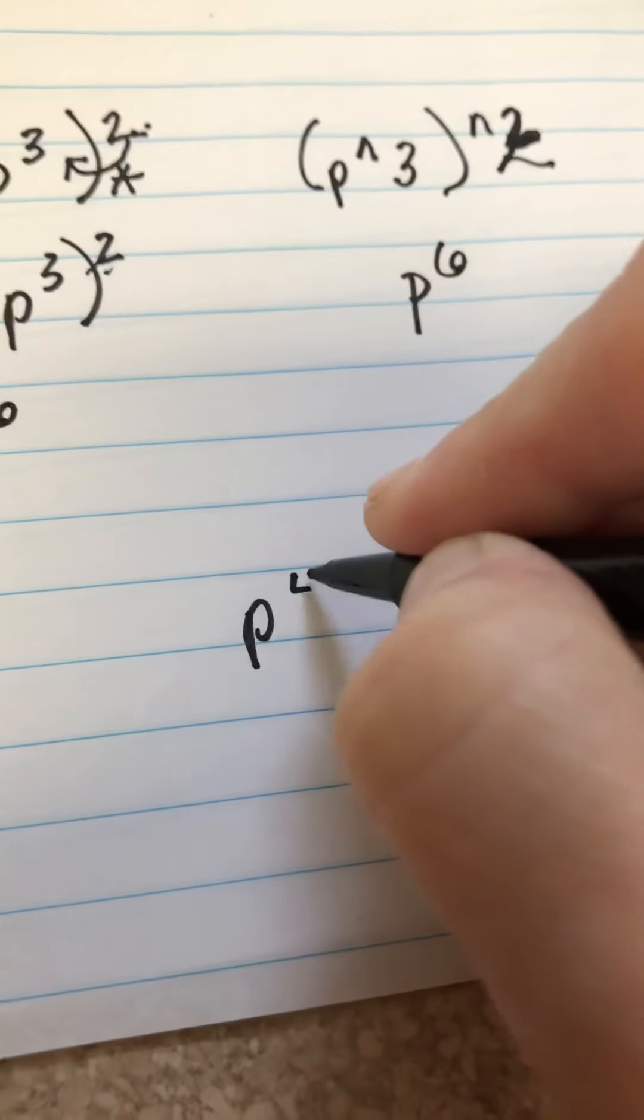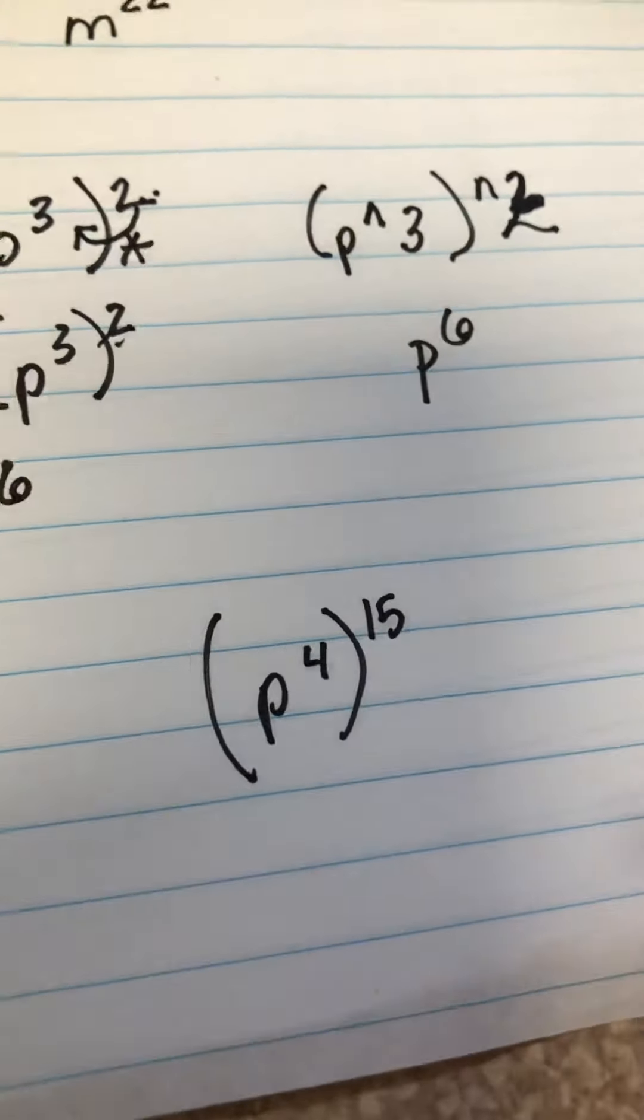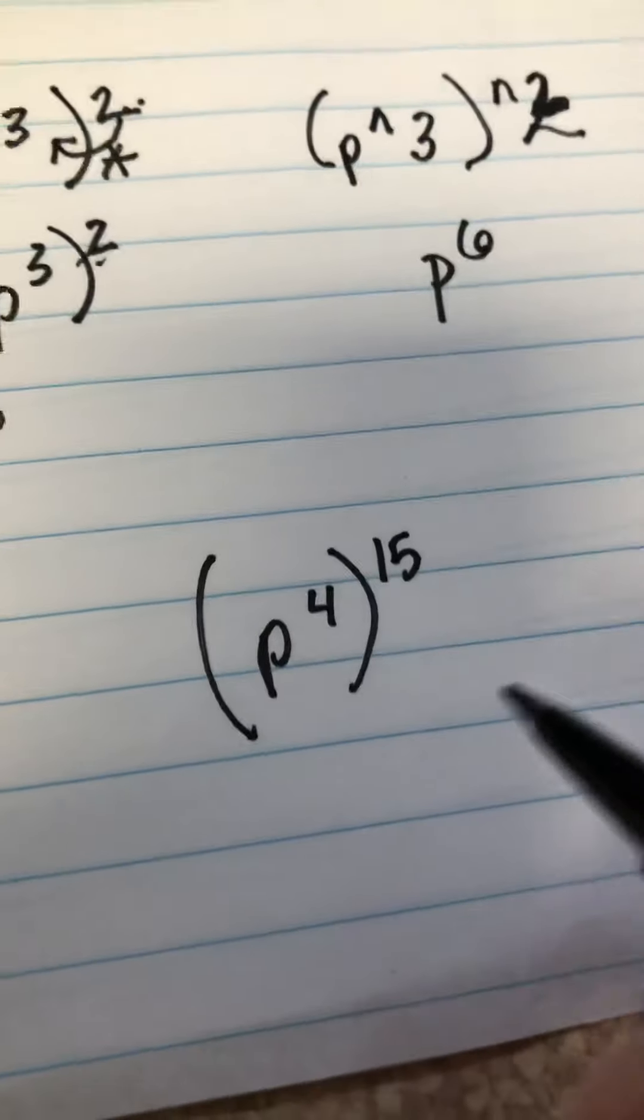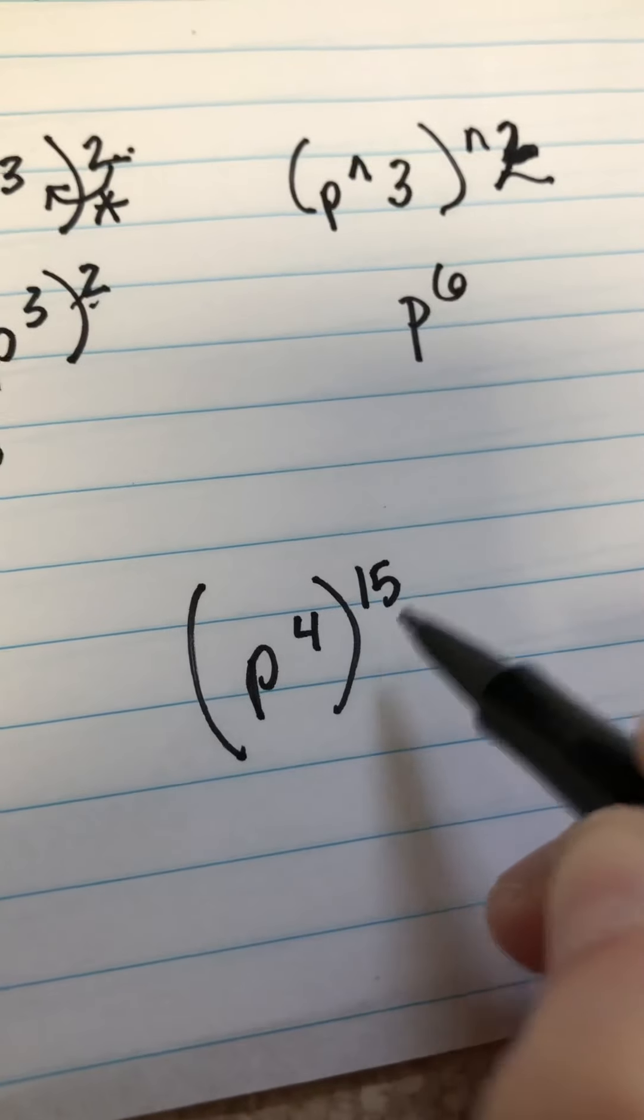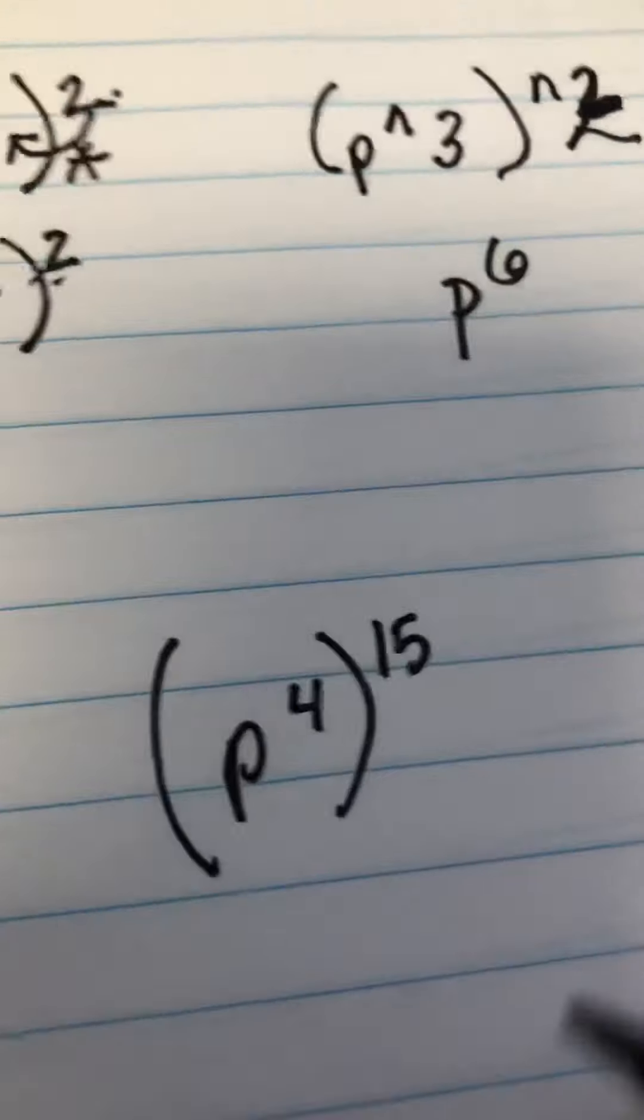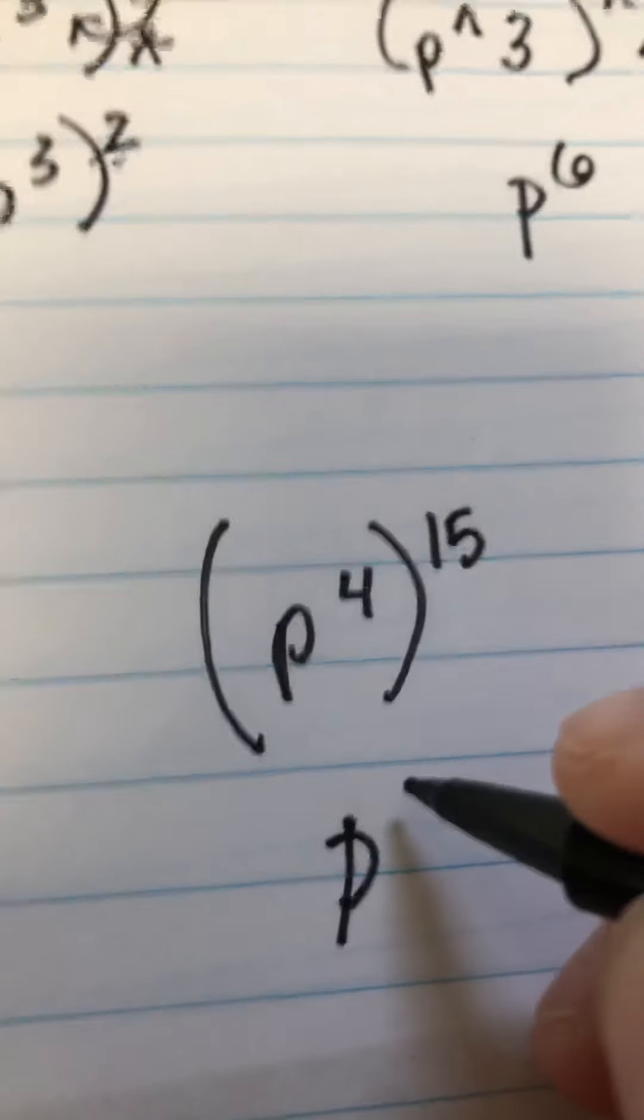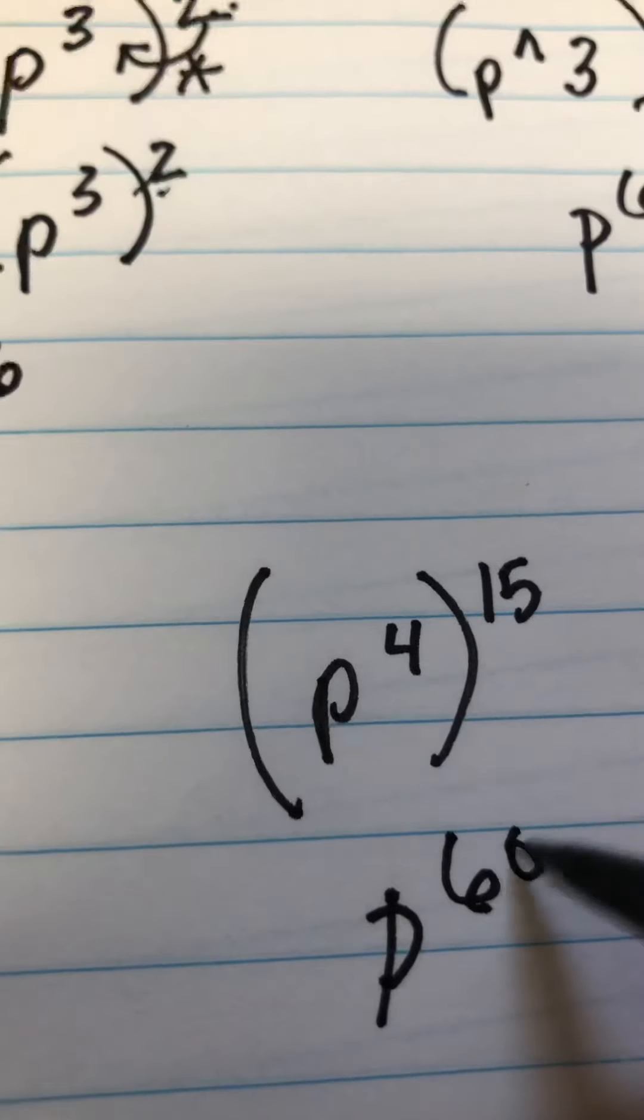We're multiplying the 3 and the 2 to the 6th power. So, if you were to have P to the 4th power to the power of 15, now we are multiplying these two because they are to the power of. P is now to the power of 4 times 15 or P to the 60th power.